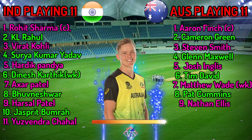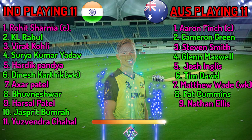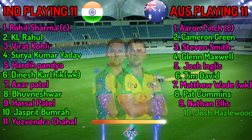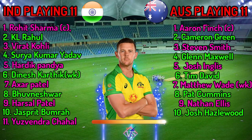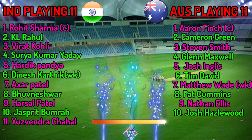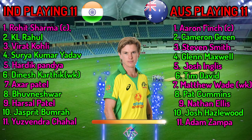Australia bowling: Number 9, Nathan Ellis, fast bowler. Number 10, Josh Hazlewood, fast bowler. Number 11, Adam Zampa, spin bowler.